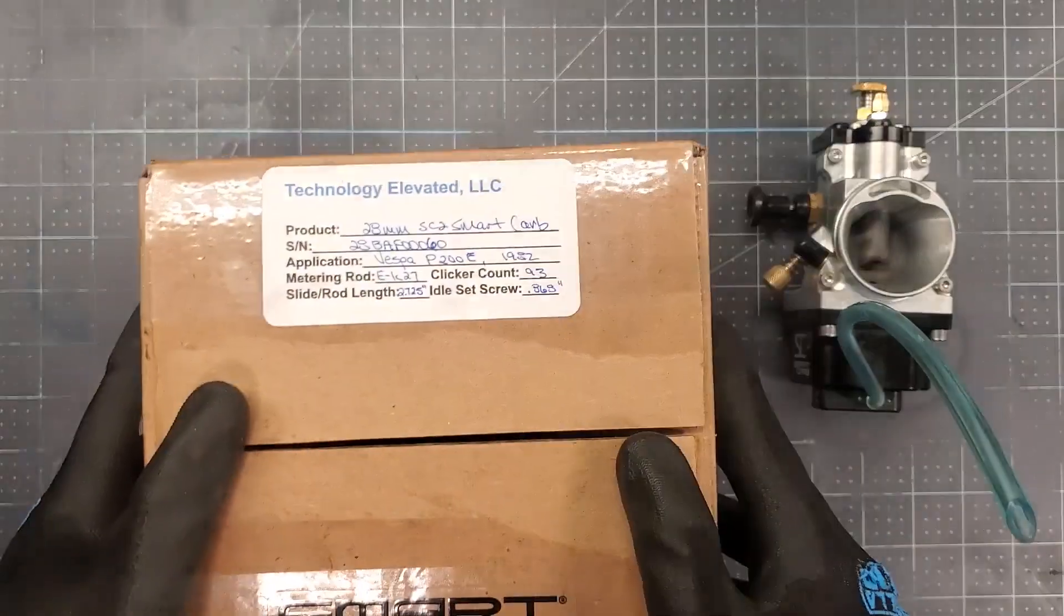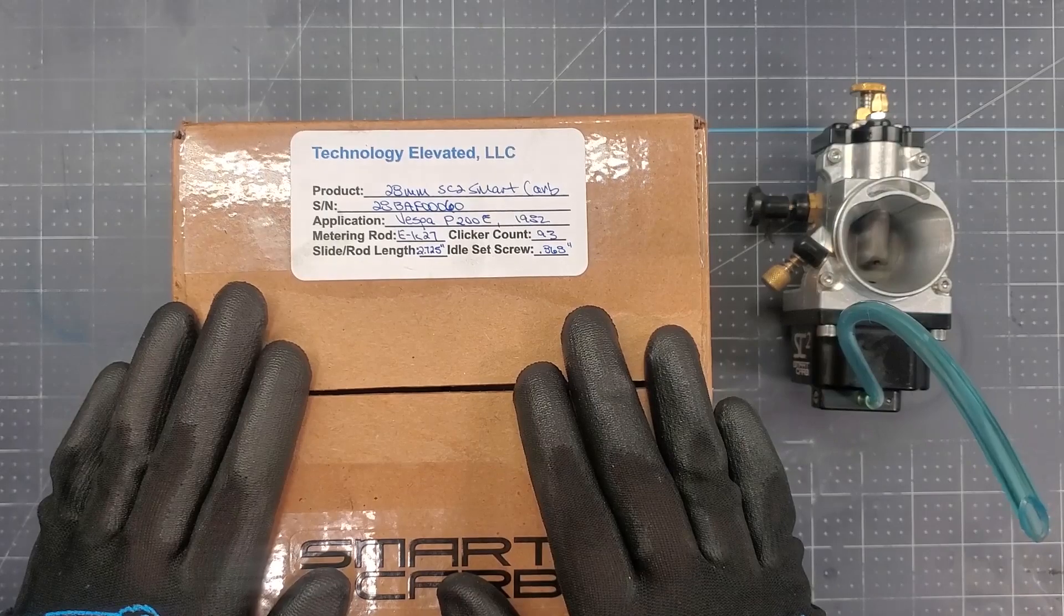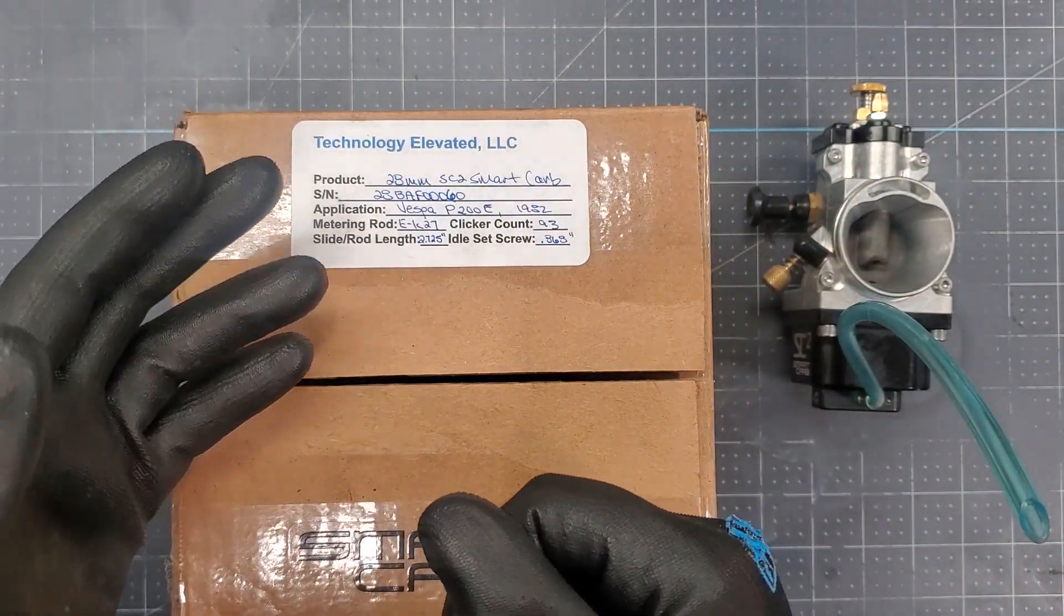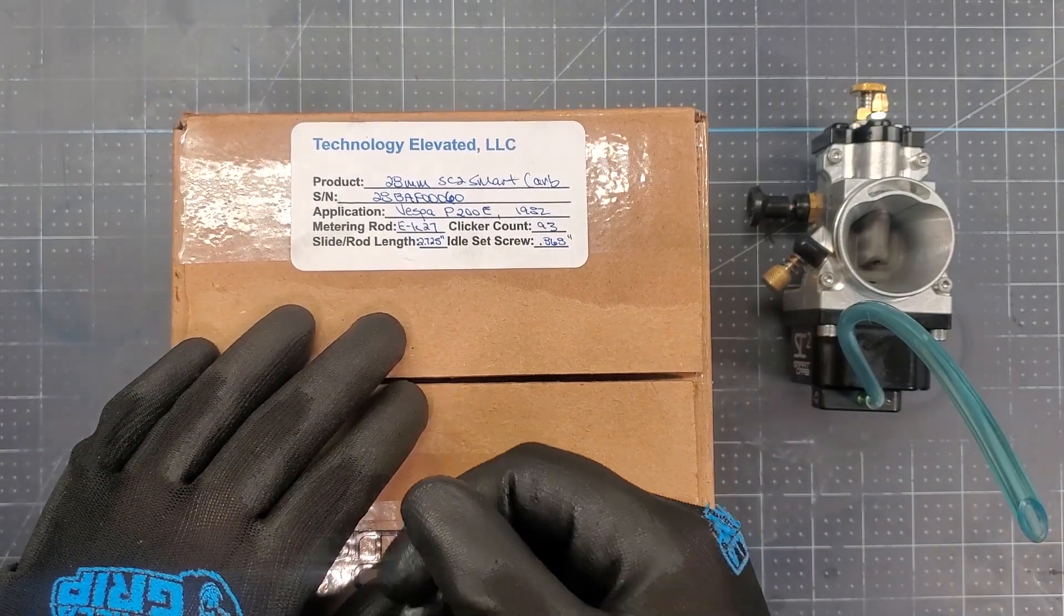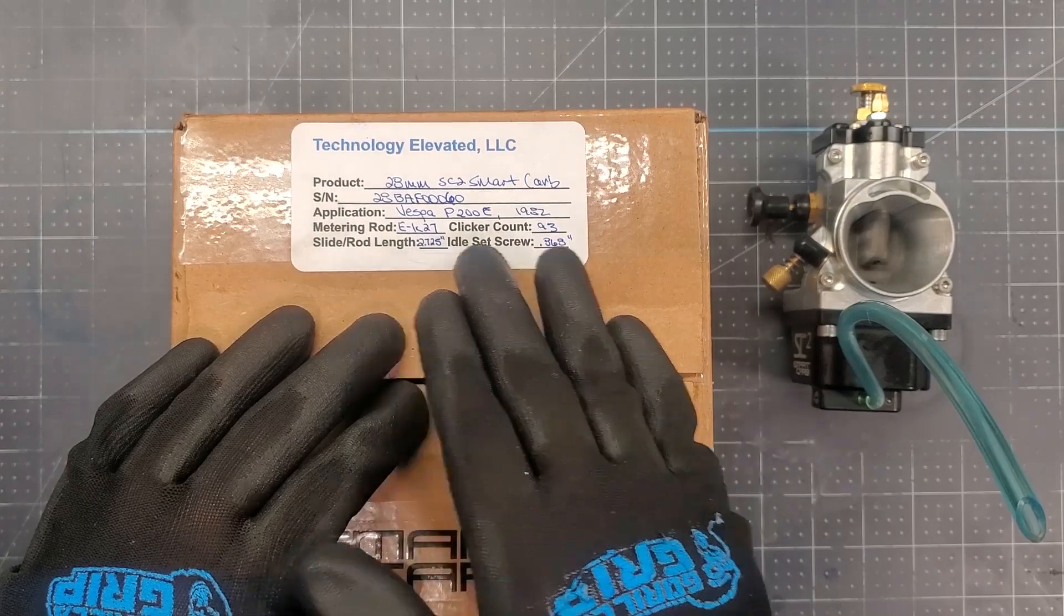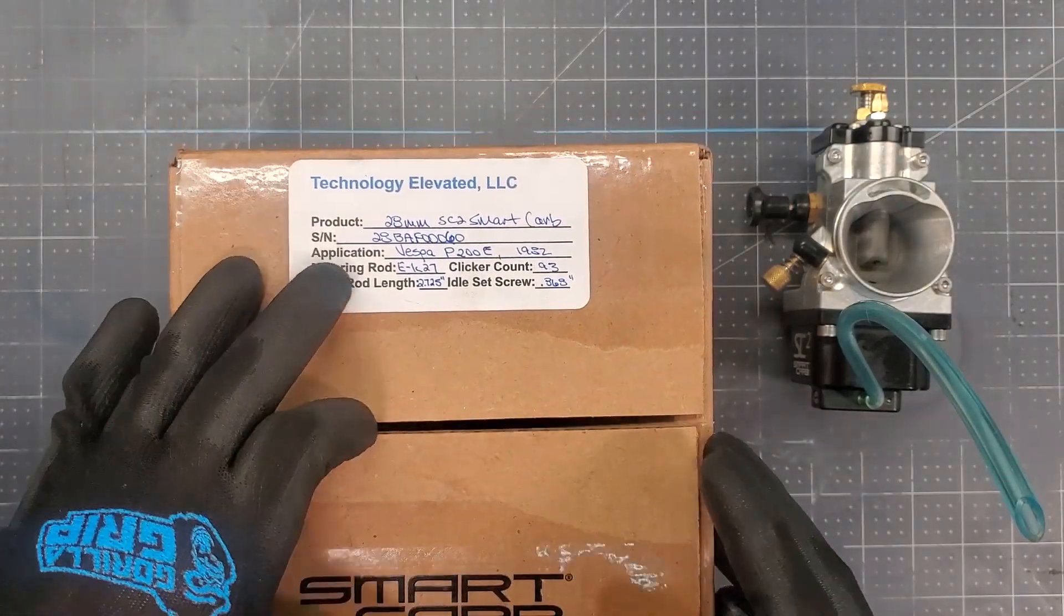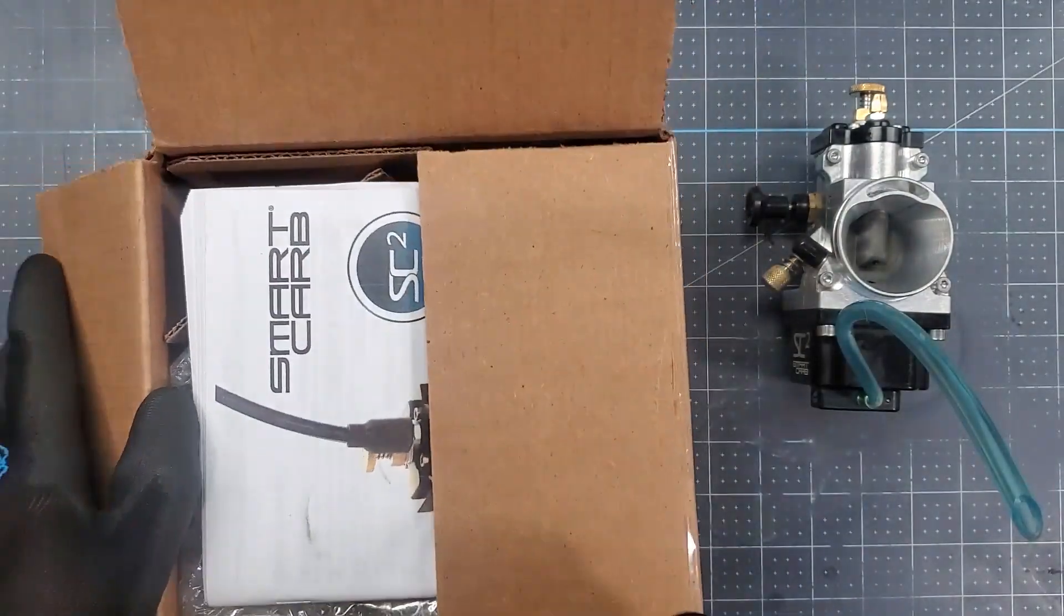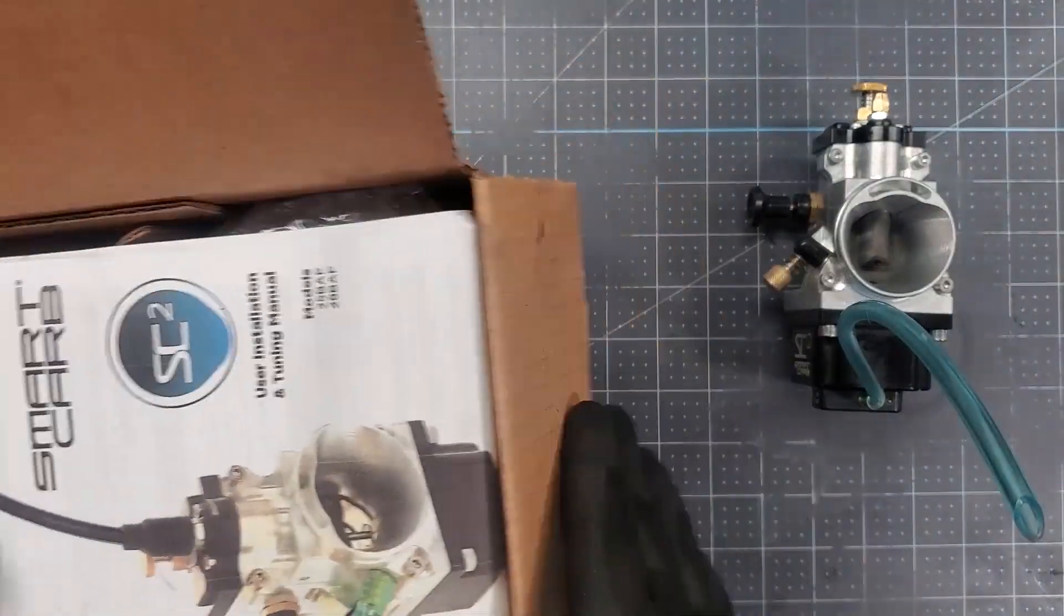Today I just want to talk about the 28mm. When you order this carburetor it's important to indicate what engine it is for, what specific modifications have been done. The reason is Technology Elevated builds these carburetors to spec. For example this is for 1978 P200 with modifications that I indicated when I ordered.